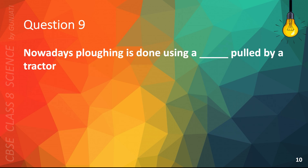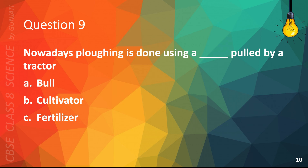Question 9. Nowadays plowing is done by using blank pulled by a tractor. A. Bull, B. Cultivator, C. Fertilizer, or D. Driller. The correct answer is B. Cultivator.